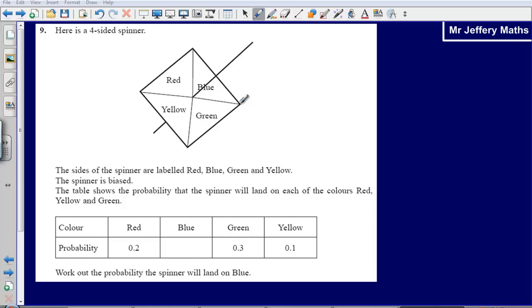This is question 9 from the 2008 non-calculator paper. Here we are taking a look at probability. It says here is a four-sided spinner.